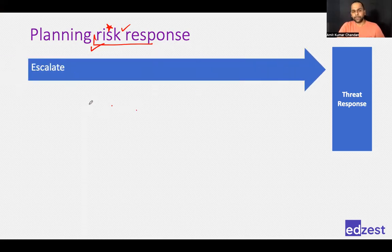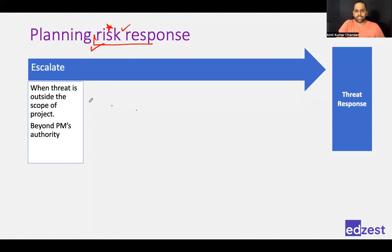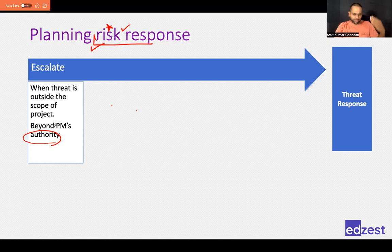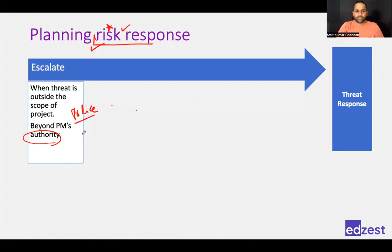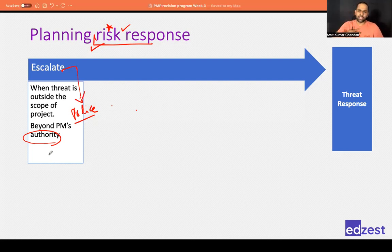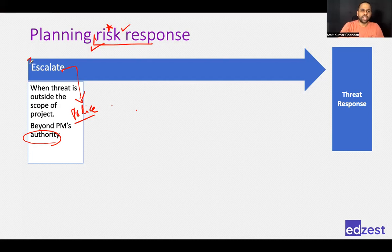The first risk response is escalate. If you come across a risk that is not within your authority — you cannot do anything about it, you don't have the expertise — you escalate. For example, if material might get stolen during transit, it is beyond your authority to fully protect it; you might need police support. There are many things beyond your authority or team expertise that require escalation. Once you escalate and receive guidance, you incorporate it into your planning.